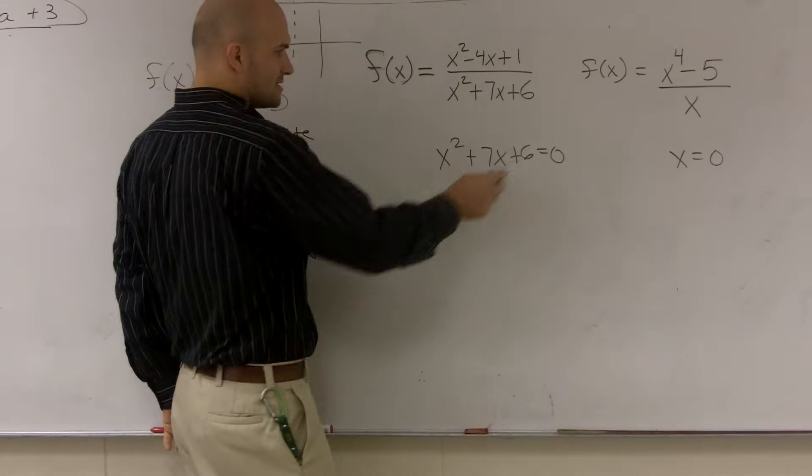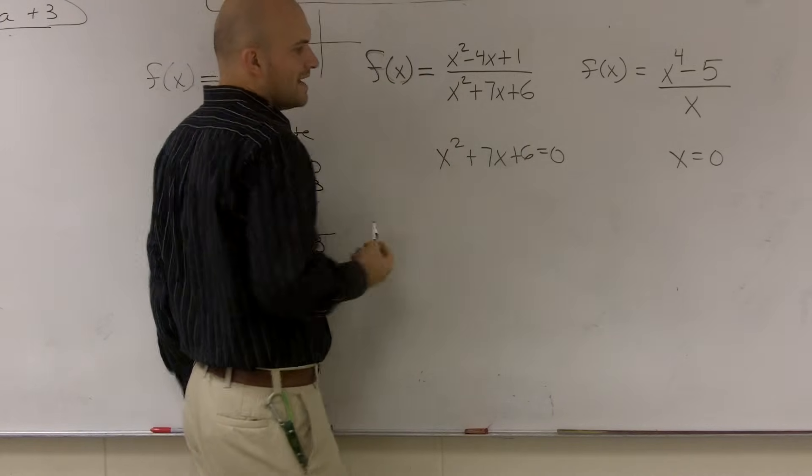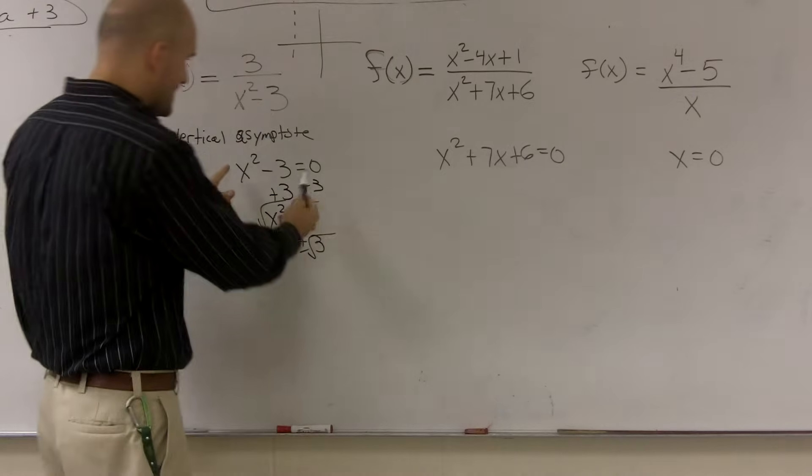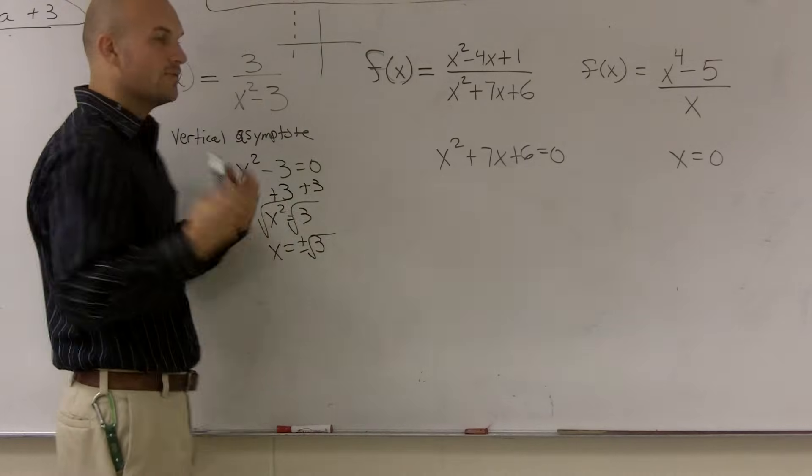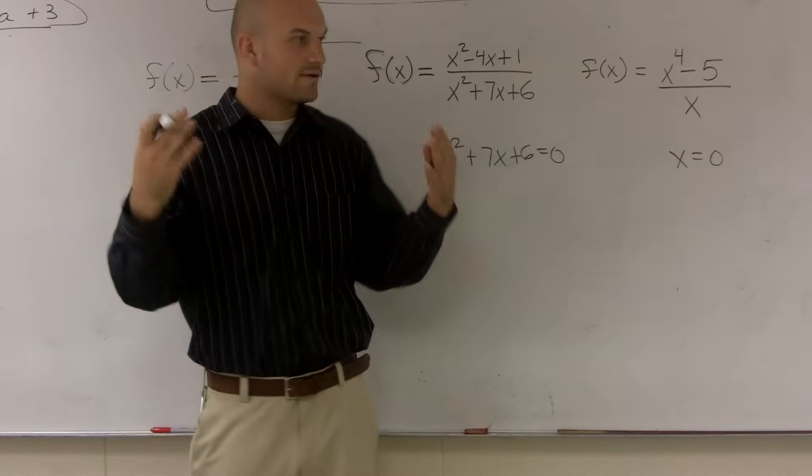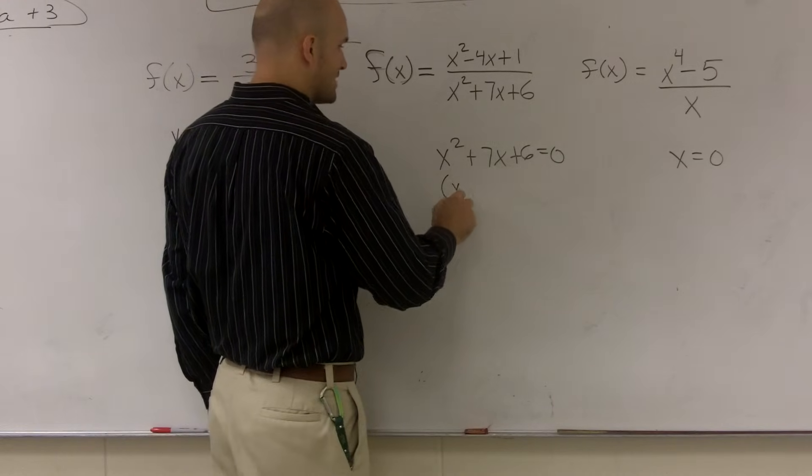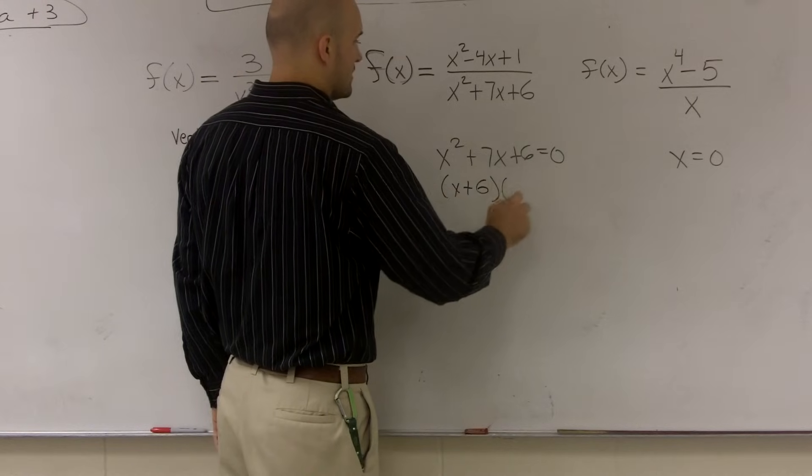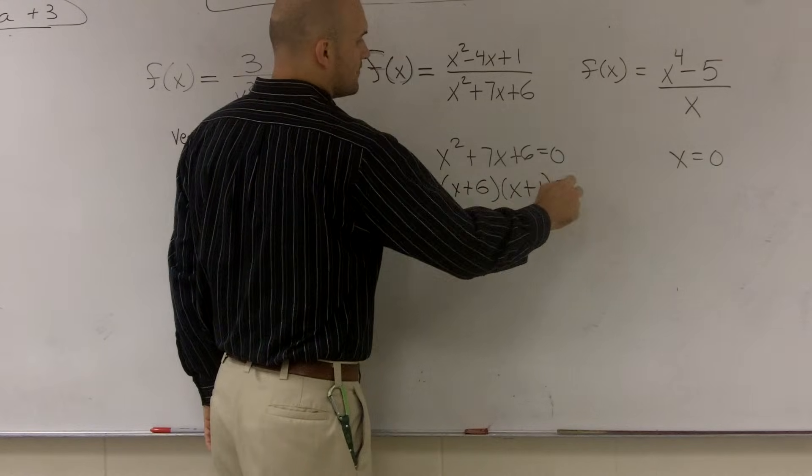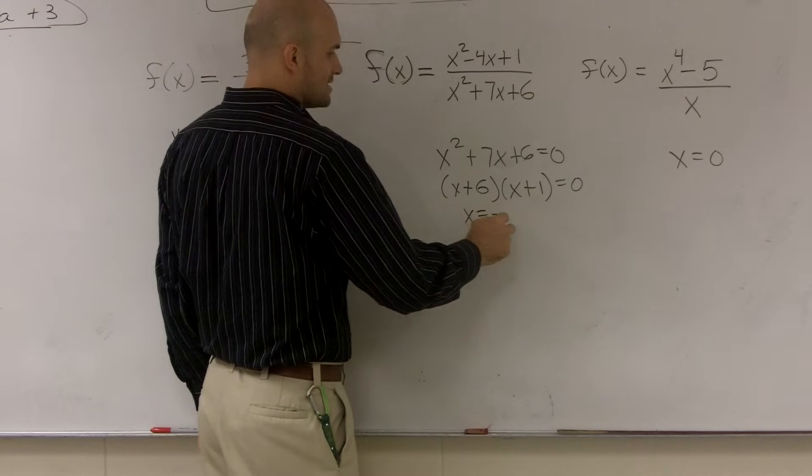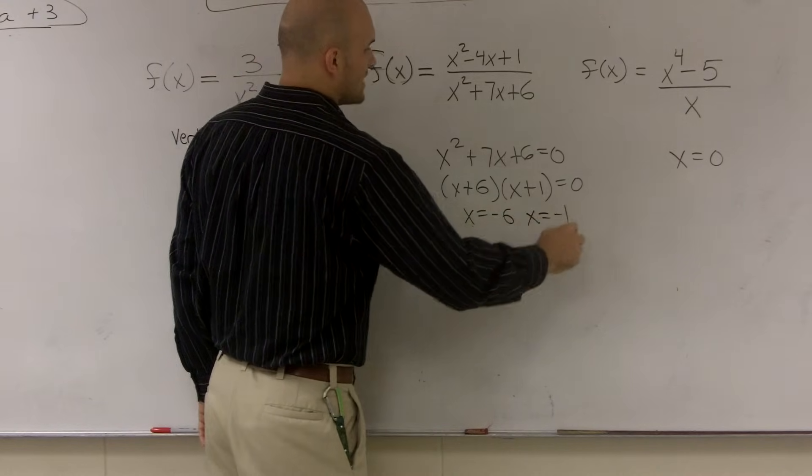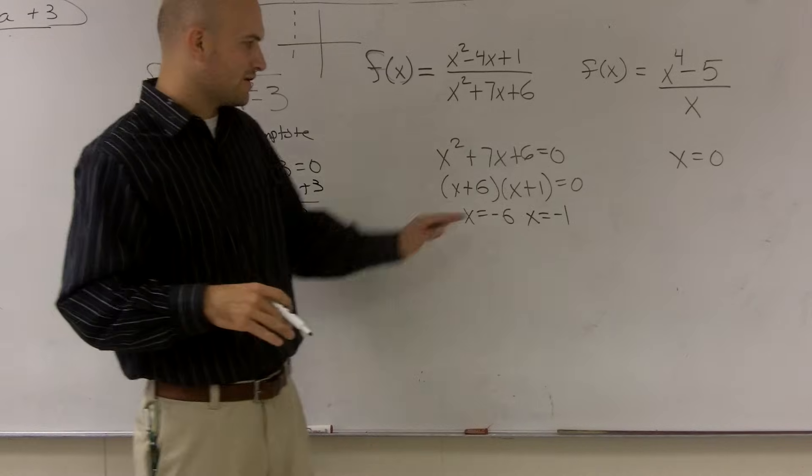Here, to find the vertical asymptotes, I set it equal to zero. And since I have a trinomial, I can't do adding to the other side. When I have a trinomial, I'm going to look at it for factoring. And I see that this can be easily factored into x plus 6 and x plus 1 equals 0. Therefore, my asymptotes are x equals negative 6 and x equals negative 1.